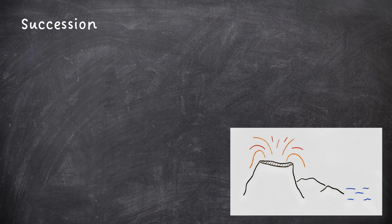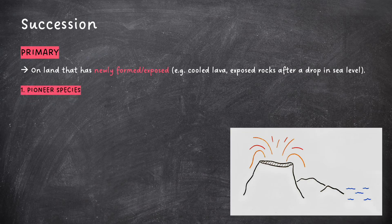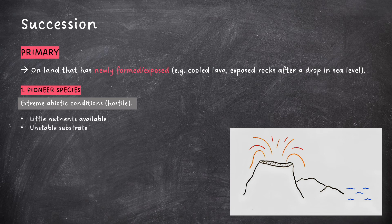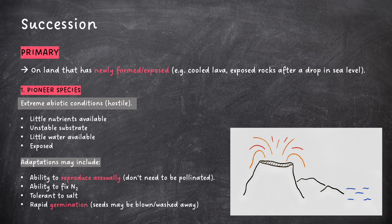Finally, we need to cover succession. Primary succession occurs on land that is newly formed or exposed, such as cooled lava or exposed rocks after a drop in sea level. First, we have pioneer species, which live in areas with extreme abiotic conditions — conditions are very hostile, with little nutrients, an unstable substrate, little water, and exposed land. They have adaptations which allow them to survive, including the ability to reproduce asexually so they don't need to be pollinated, the ability to fix nitrogen gas, salt tolerance, and the ability to germinate rapidly, reducing the likelihood of seeds being blown or washed away.